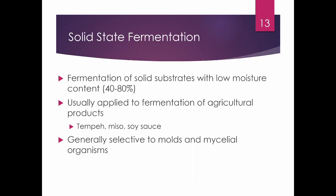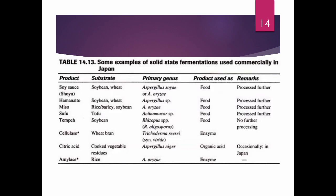Now let's move on to solid-state fermentation. Solid-state fermentation is the fermentation of a solid substrate with low moisture content, in a range of 40% to 80%. This is usually applied to fermentation of agricultural products such as tempeh, miso, and soy sauce, and is generally selective to molds and mycelial organisms. Examples used commercially include soy sauce, hamanato, miso, sufu, tempeh, cellulase, citric acid, and amylase production.